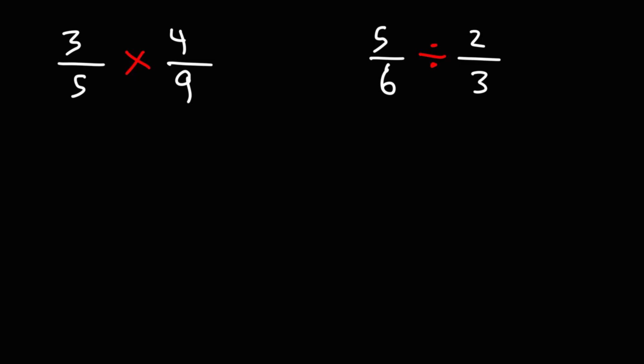So for the first example, to multiply two fractions, you just need to multiply across. 3 times 4 is 12. 5 times 9 is 45.